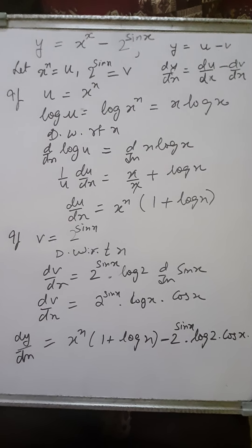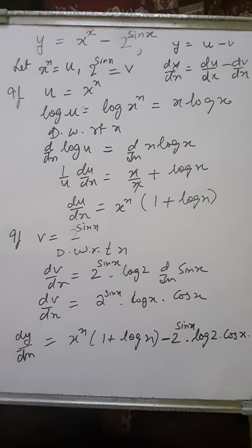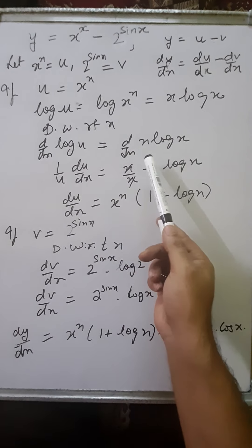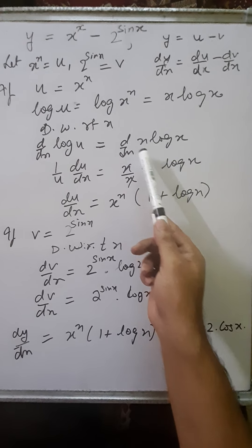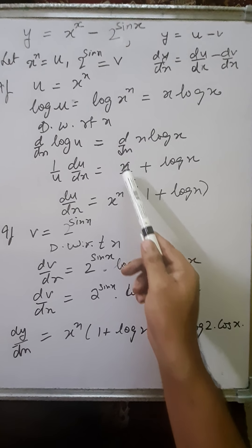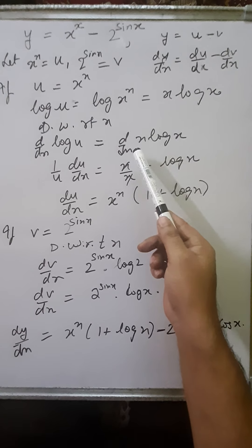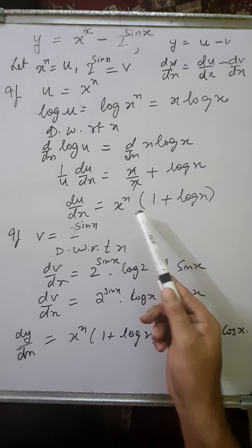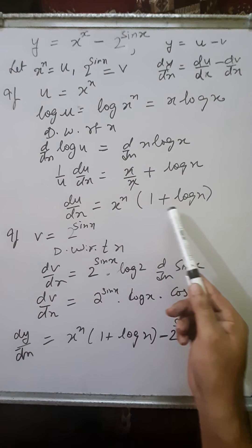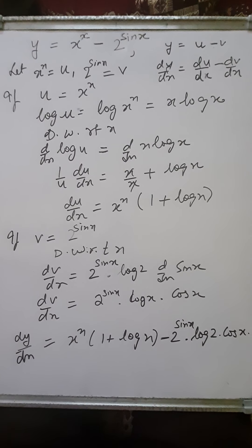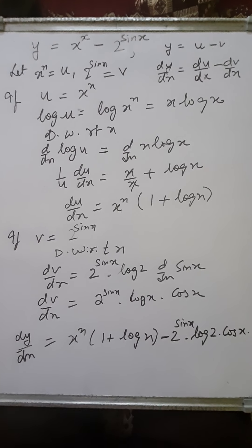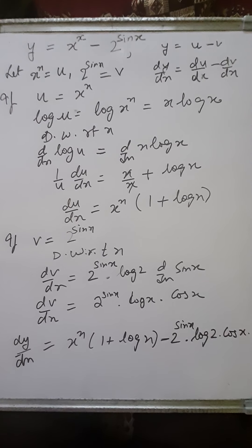Differentiating: d/dx of log u equals d/dx of x log x. So 1/u du/dx equals the derivative of x log x. Here we have a product of two functions — algebraic and logarithmic — so product rule is applied: x times d/dx of log x plus log x times d/dx of x. The derivative of log x is 1/x, so x and x cancel, giving 1. And d/dx of x is 1, so we get log x. Therefore 1/u du/dx equals 1 + log x. Cross-multiplying u, du/dx equals x^x (1 + log x).